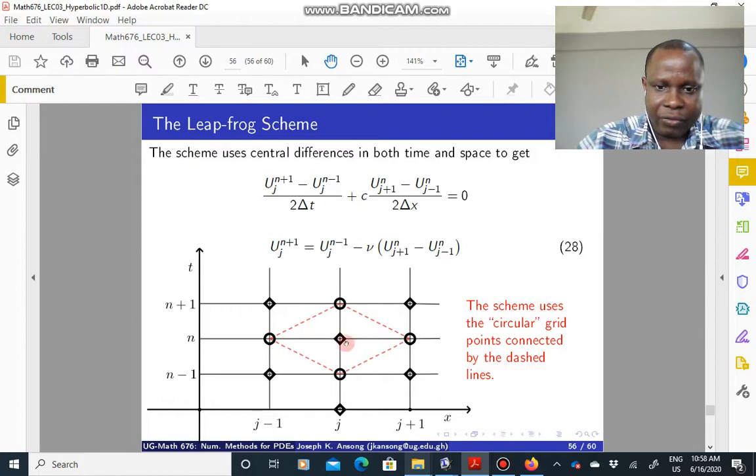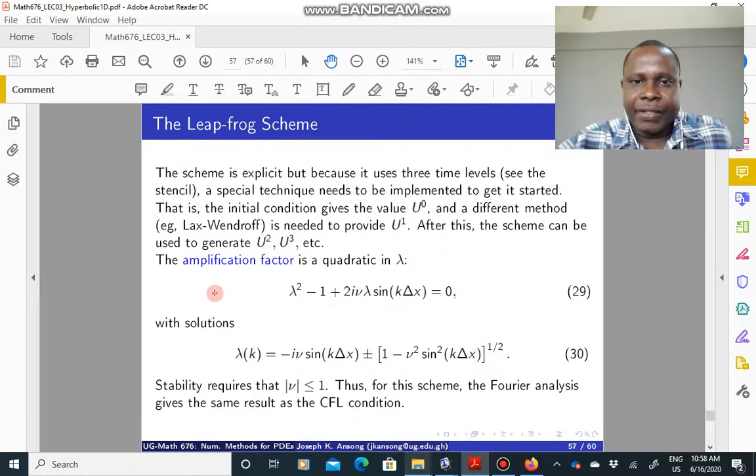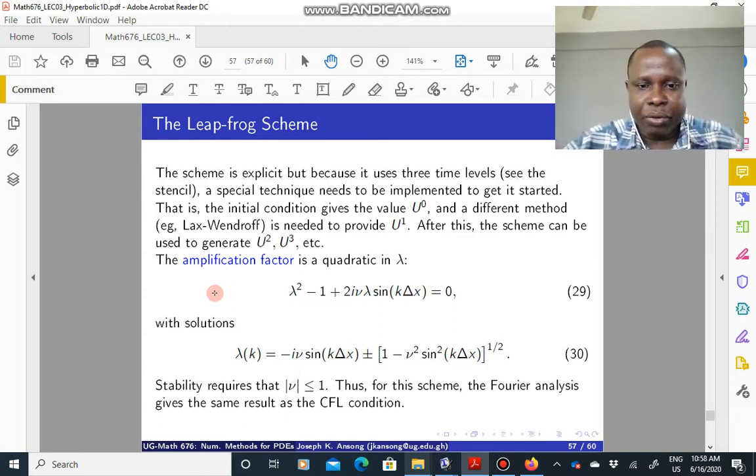Of course, we'll talk about these other ones later on, but if you look at the scheme, it basically connects these circular points here in its approach. So it is explicit, which is important, which is nice because it means it's easy to program or code it up.